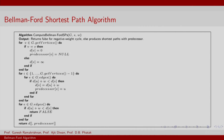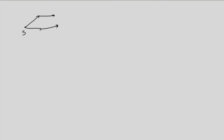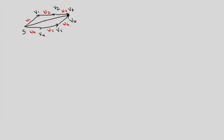Let us understand the algorithm with a simple example. We will illustrate the working of the Bellman-Ford algorithm through an example. Consider a purely directed graph. Let us give names to these vertices v1, v2, v3, v4, v5, and v6, and an additional vertex v7 to form a directed cycle. The Bellman-Ford algorithm iterates through all the edges of the graph.